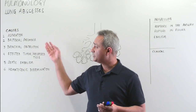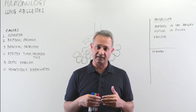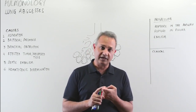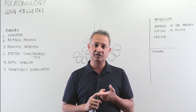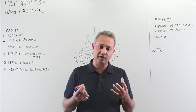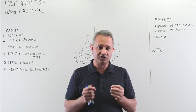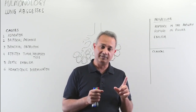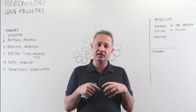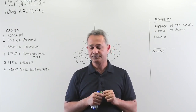Aspiration brings oral flora into the lungs. The dangerous organisms include Staphylococcus aureus, Klebsiella, Pseudomonas, and Haemophilus influenzae. When these organisms reach the lung they can cause aspiration pneumonia, which can then lead to lung abscesses. Similarly, gastric acids aspirated into the lungs can cause irritation, local necrosis, and tissue damage.